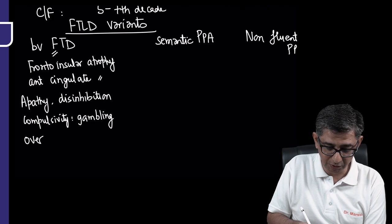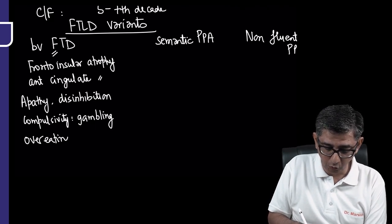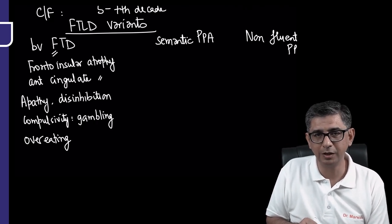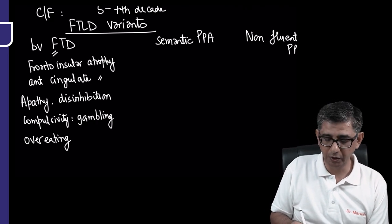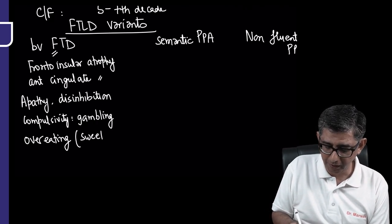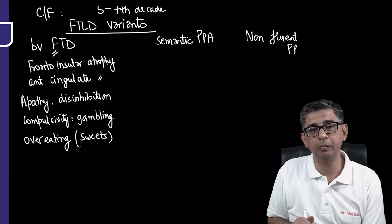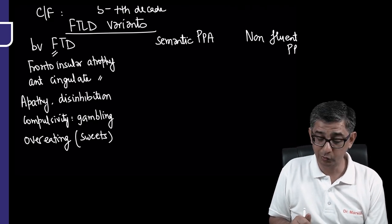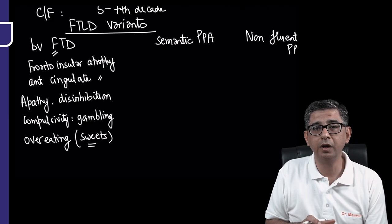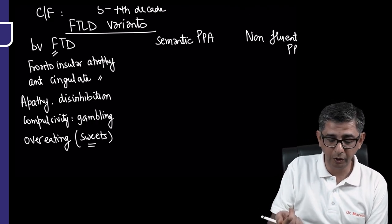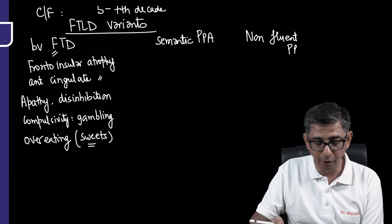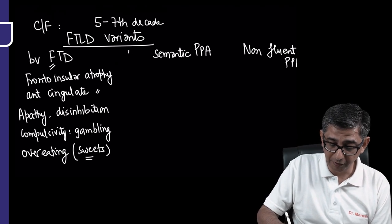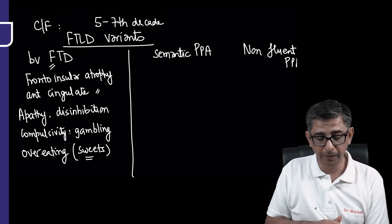These patients will exhibit hyperorality and overeating. He might be overeating anything served to him, or it could be two specific items like sweets. In India, this guy might ask his wife to make sweets again and again - like ladoo or gajar ka halwa. He's exhibiting very peculiar behavior for one particular food item, gambling behavior, disinhibition to the level he's been labeled a regular sex offender by cops.